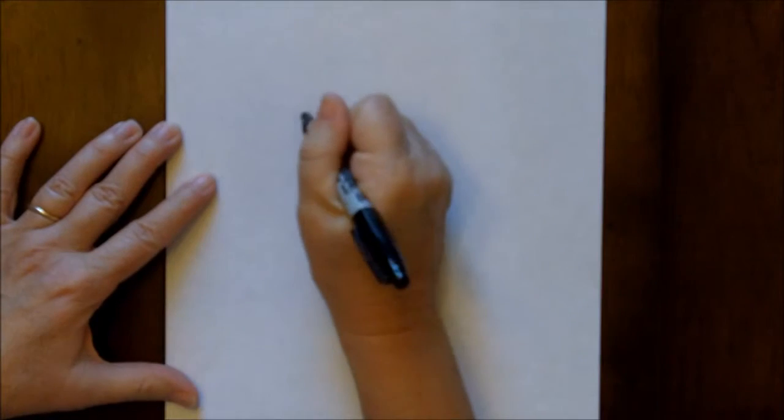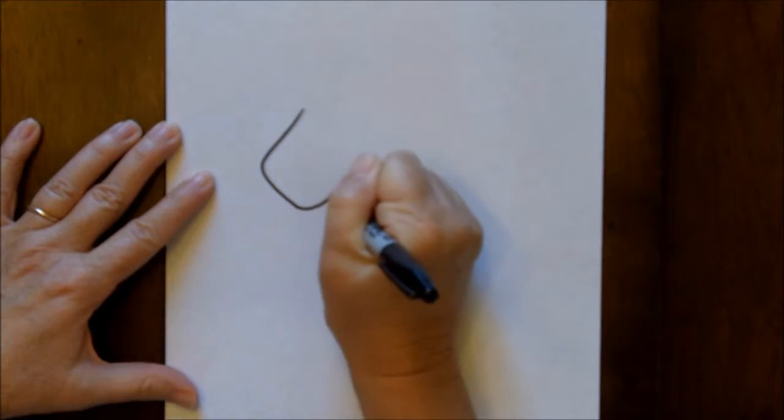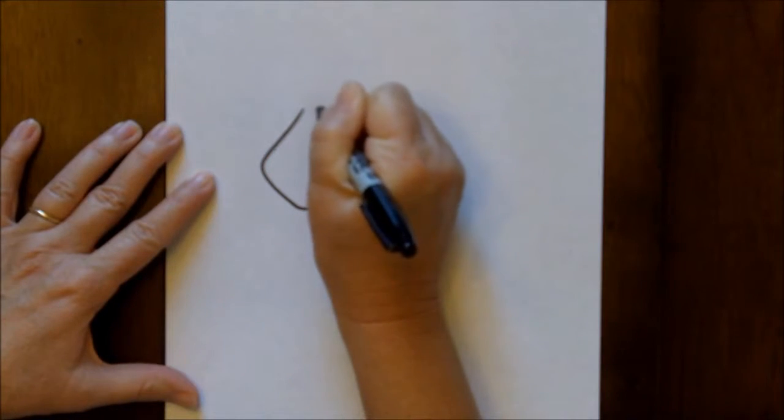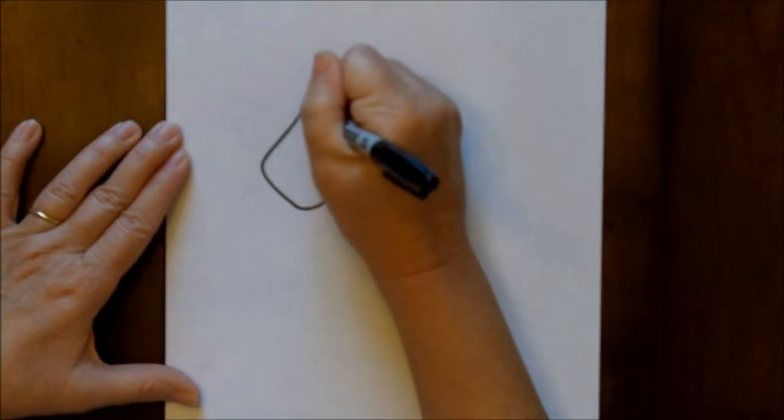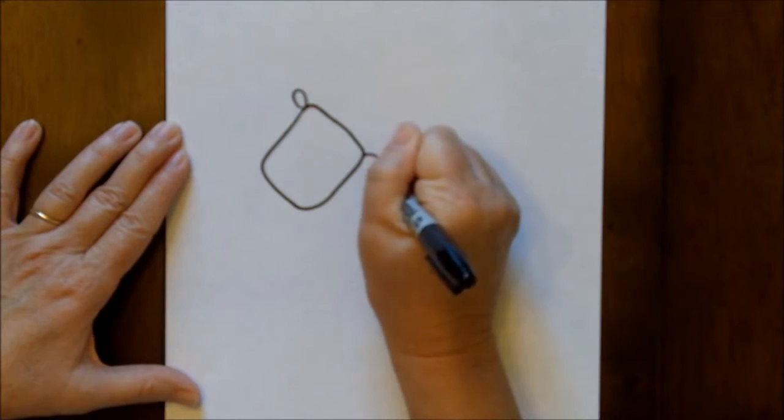We're going to start out with a shape, it's basically a square that has rounded corners. Close that up. Let's put some little ears on him, which are little ovals.